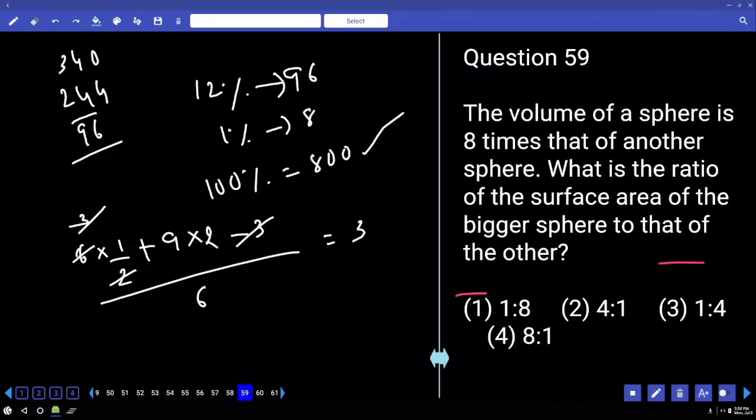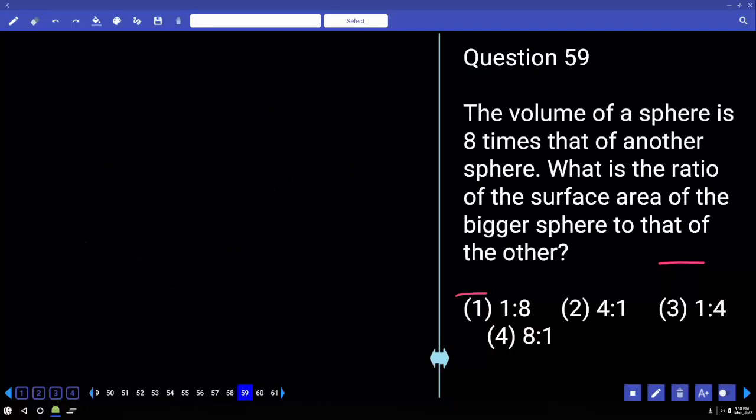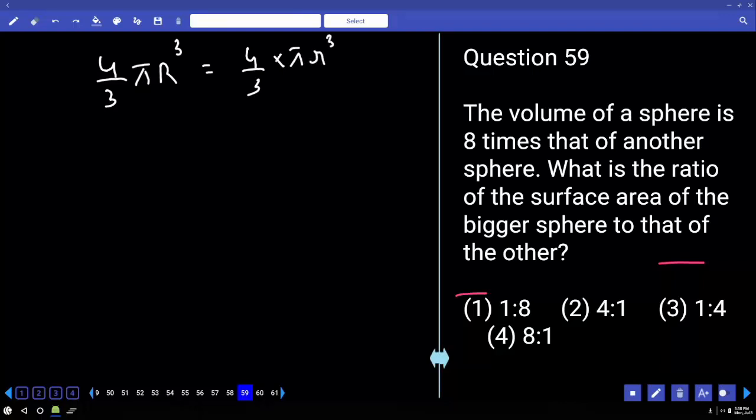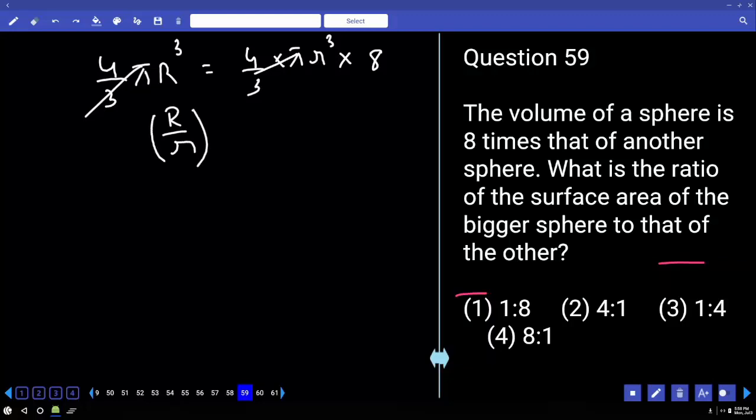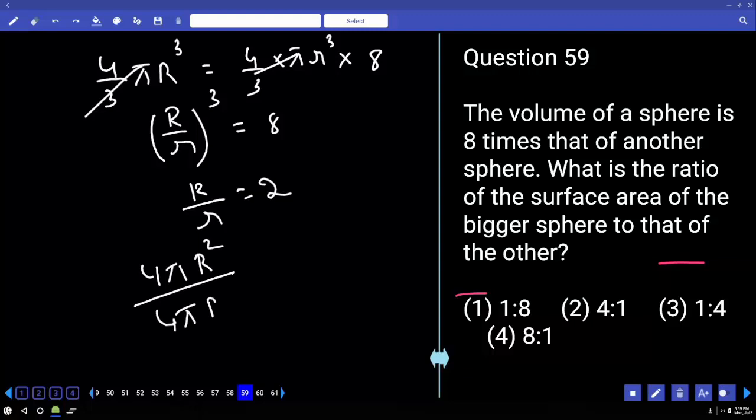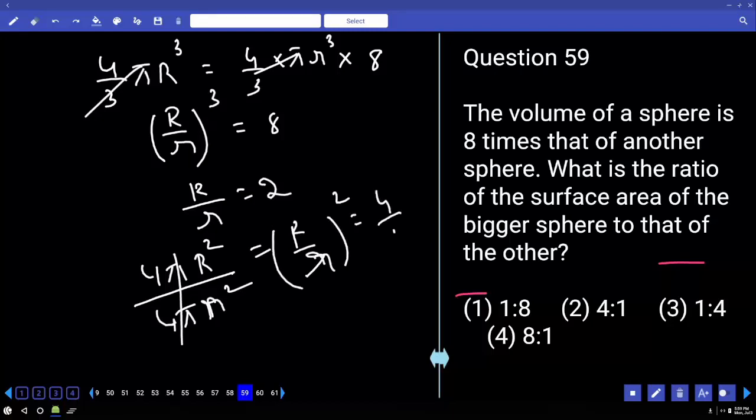59. The volume of a sphere is 8 times that of another sphere. What is the ratio of the surface area of the bigger sphere to that of the other sphere? 4 is to 1. Look at the board. Let big sphere radius is capital R. Its volume means 4 by 3 pi R cube. Small sphere radius is small r. And its volume means 4 by 3 pi r cube. How many times? 8 times. R by r whole cube is equal to 8. Or simply R by r is equal to 2. But you are asked to compare surface area. What is the formula for surface area? 4 pi r square. So, big one, capital R, small one, small r. R by r whole square. Answer. 4 is to 1.